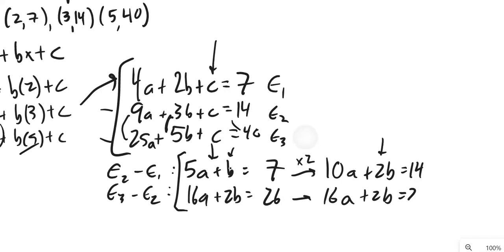Now, I can do that subtraction. And I think I'll just subtract the top one from the bottom one. So, 16 minus 10 is 6a. B's go, which I wanted to happen. 26 minus 14, dang, is 12.